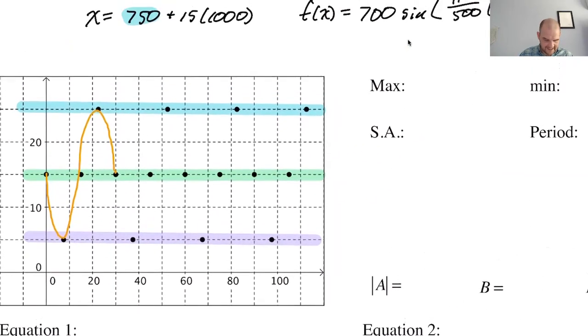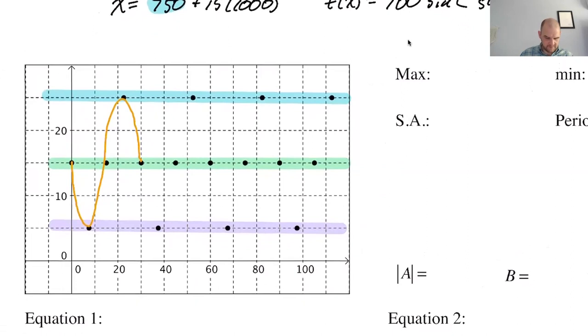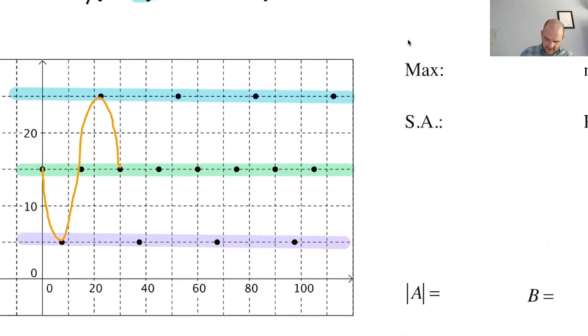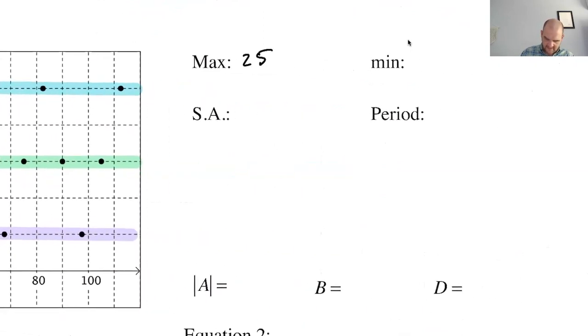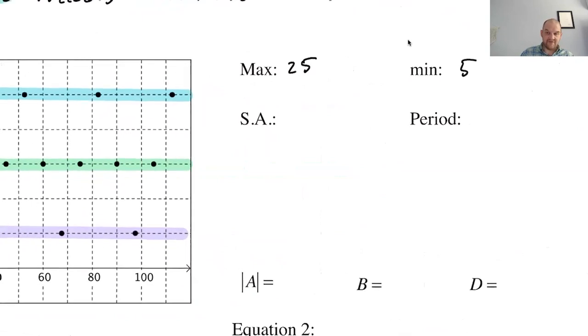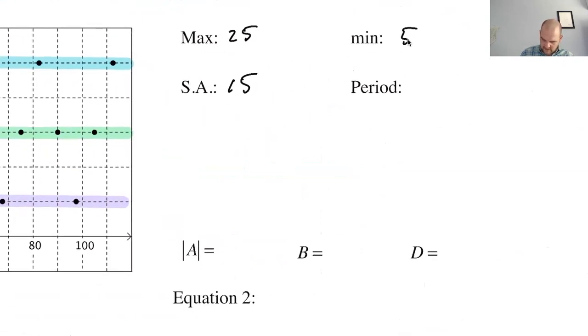So you don't need as much information as you've been given before. What are we counting by here? I think fives. So the maximum looks like it'll be 25. The minimum will be 5, which means I need to average those. So 15 will be the sinusoidal axis. I can go up 10 and I can go down 10, which makes the amplitude 10.